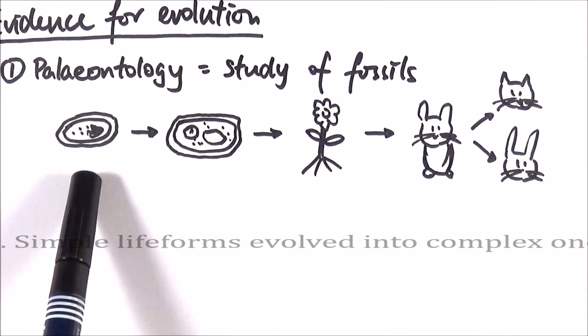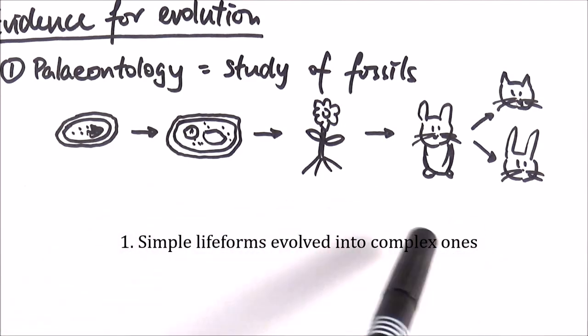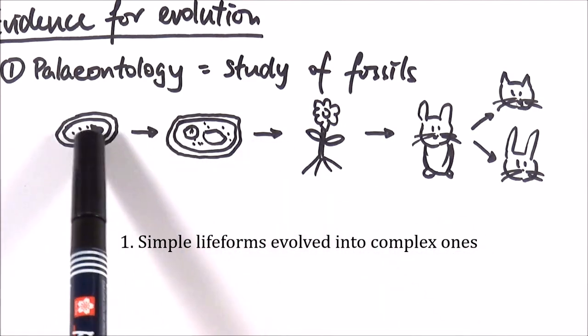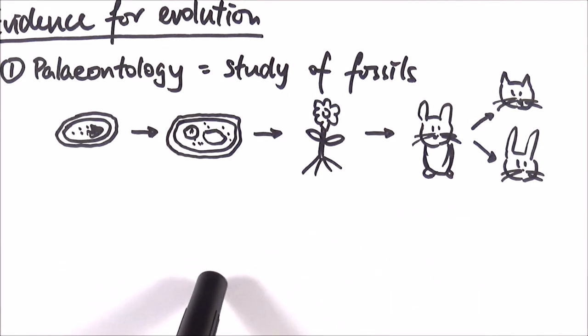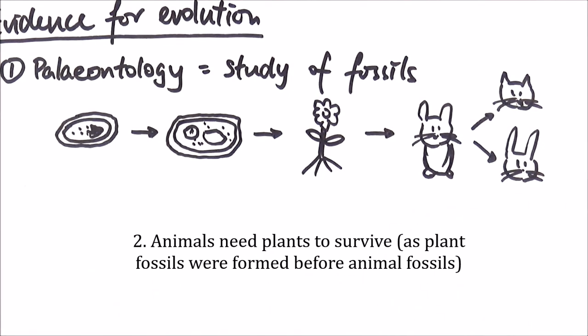So first of all, we can see that life forms can evolve into more complex ones, for example, without a nucleus or naked DNA, into one with the nucleus and then more complicated ones. We can also see that animals need plants to survive and reproduce, because we found many earlier plant fossils.